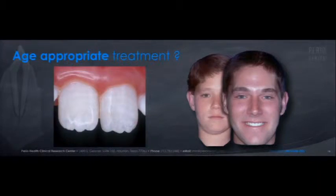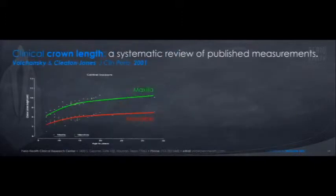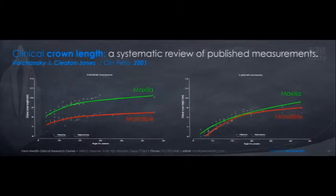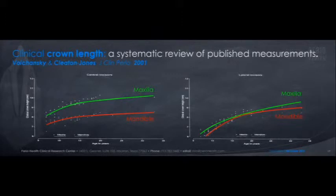At what point is it safe to crown lengthen? I'm often sent kids right after their orthodontic bands are removed, and they don't like their gummy smile. Is it safe at age 12, or do I have to wait until 28? We can look to the evidence base. A systematic review by Valansky, Cletan, and Jones found there's a lot of change in tooth length up to about 12 years, then it flattens out from 12 to 16. From 16 to 18, there's virtually no change, and beyond 18 certainly no change. This helps me sleep better knowing when it's safe to proceed.